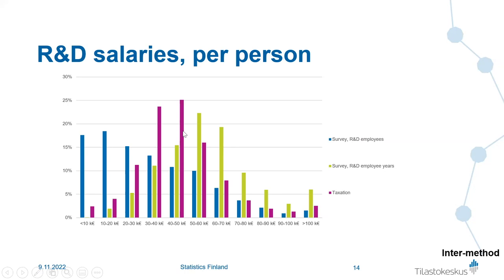The green column looks more reasonable — the most common annual salary for a researcher is between 50,000 and 60,000 euros, which is quite plausible. A third approach uses taxation data directly: taking the persons I defined as researchers and checking their actual salaries. Those taxation-based average salaries follow the purple column, with the average annual salary between 40,000 and 50,000 euros.